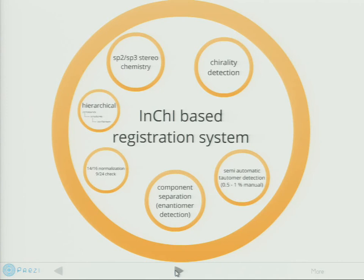We also have a chirality detection step, because in most cases the chirality flag in mol files is just meaningless. So we detect chirality using enumeration and looking at the stereo layer appearing in the InChI. We also have an InChI-based component separation which deals with enantiomers as well.